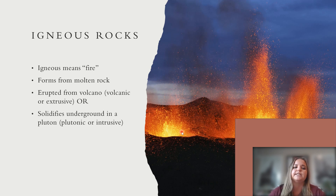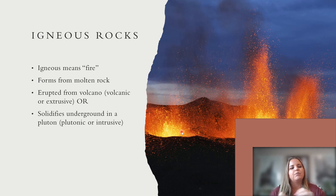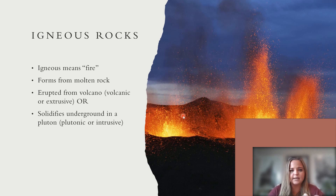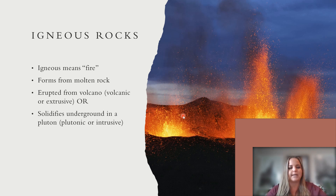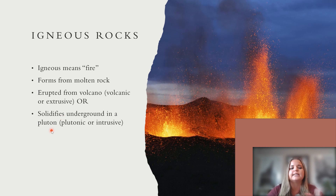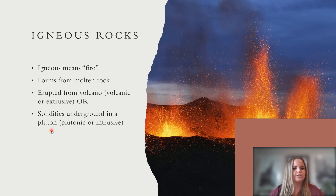First up is igneous. Igneous means fire, so all igneous rocks are formed from some sort of molten rock or molten lava. They can either be erupted out of a volcano — which we call volcanic or extrusive igneous rocks because they have exited the earth and formed on the surface — or they can solidify underground in something called a pluton, a body of magma that has solidified over thousands or millions of years, which we call plutonic or intrusive igneous rocks.